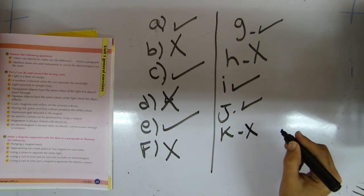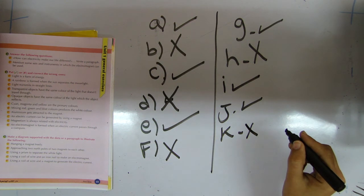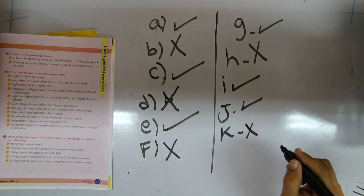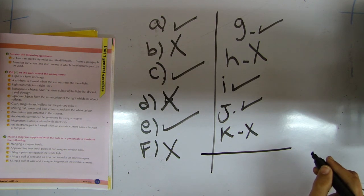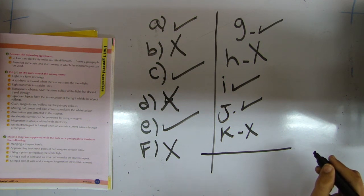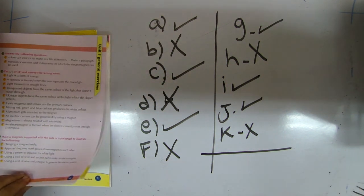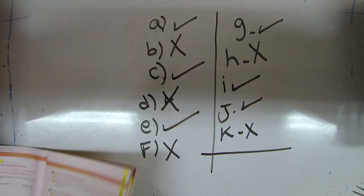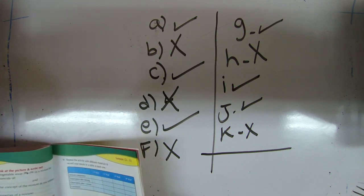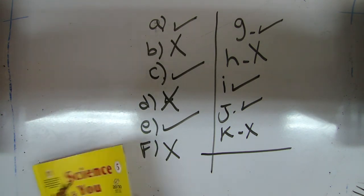Now we finish the fourth question. Question number five: make a diagram supported with data or a paragraph illustrating the following. You can do it by yourself as an activity. Now we finish unit one. I hope in the next lesson to continue our revision on unit two. Thank you. Bye-bye.